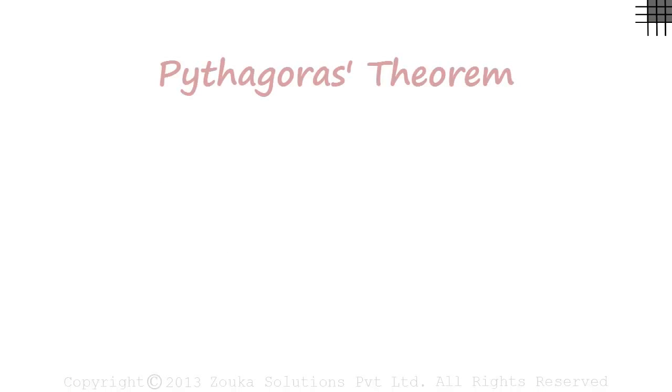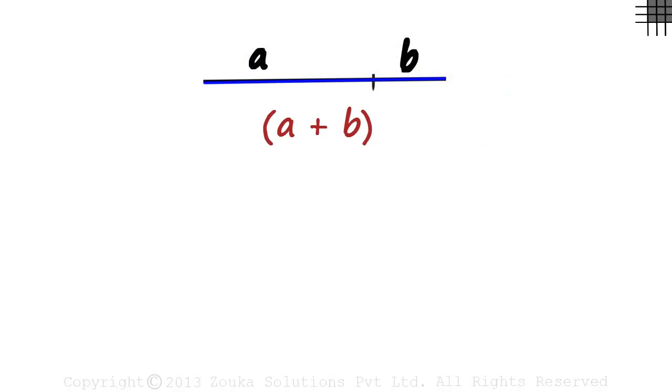The process to understand the Pythagoras theorem is pretty similar to the one for A plus B the whole squared. We draw a line of any length and mark a point on it. This point can be marked anywhere on the line. We name the parts A and B. This length will be A plus B.